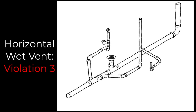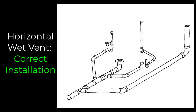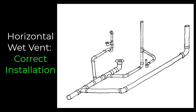Horizontal wet vent violation three: in the upper right corner of this picture we see a three-inch stack catching waste from fixtures on an upper level coming down and ramrodding all the way through the center of our horizontal wet vented bathroom group. Dumping waste from upper fixtures through the middle of a bathroom group impacts airflow. The correct installation has that three-inch stack connect downstream from the horizontal wet vented bathroom group, so all those fixtures are together and the horizontal wet vent from the lav can serve them without interference.